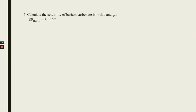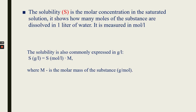The last problem: calculate the solubility of barium carbonate in moles per liter and in grams per liter. The solubility product for barium carbonate is given. Let me remind you from the lecture material what solubility is. Solubility is the molar concentration in the saturating solution — it shows how many moles of substance are dissolved in one liter of water, and is measured in moles per liter.